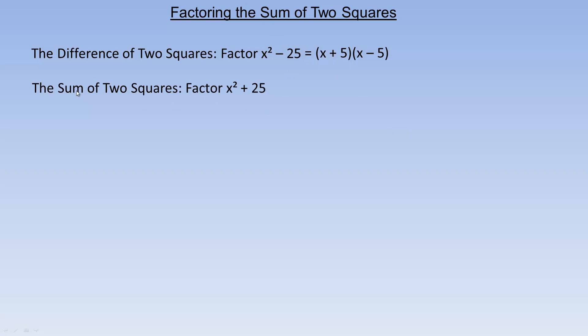We're talking about factoring the sum of two squares — that's what this tutorial is about. So x squared plus 25 is an example of the sum of two squares, sum being there's a plus in between this perfect square and this perfect square. And this won't factor. Now, I want to qualify — actually I guess the word is quantify — what exactly 'won't factor' means.